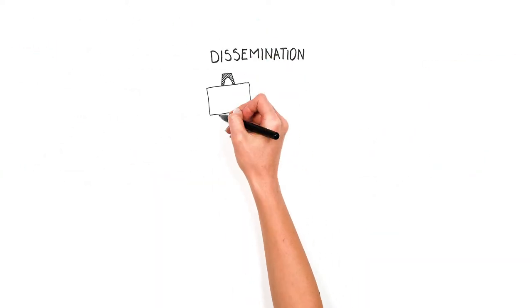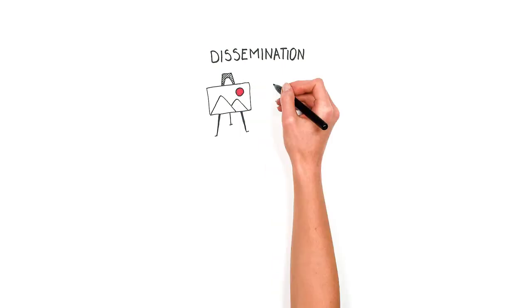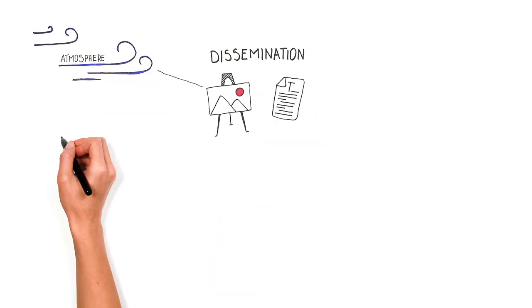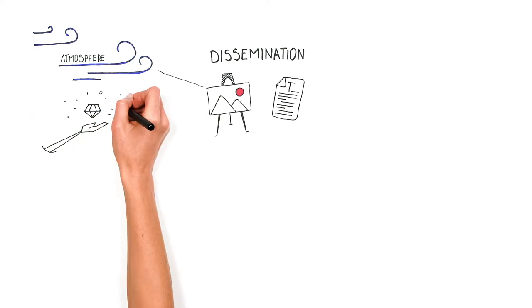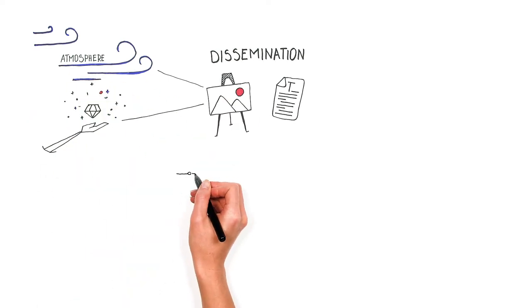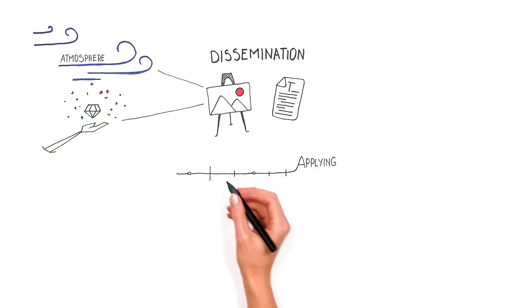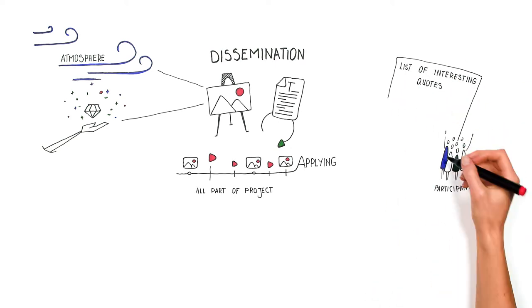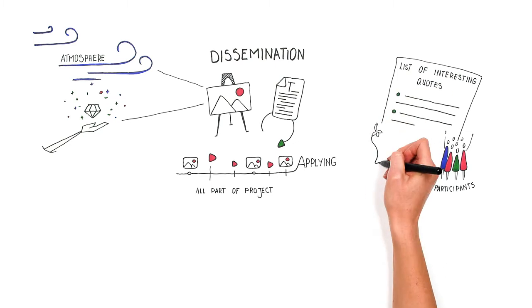For good dissemination, you need good visual materials and good texts from the beginning to the end. Visual material is very useful to reveal the atmosphere and value of the project. Make sure you make pictures and videos from all parts of the project even before applying. The same goes for texts. Collect quotes of participants and partners throughout the project. A list of interesting quotes may be useful and spice up your texts later.